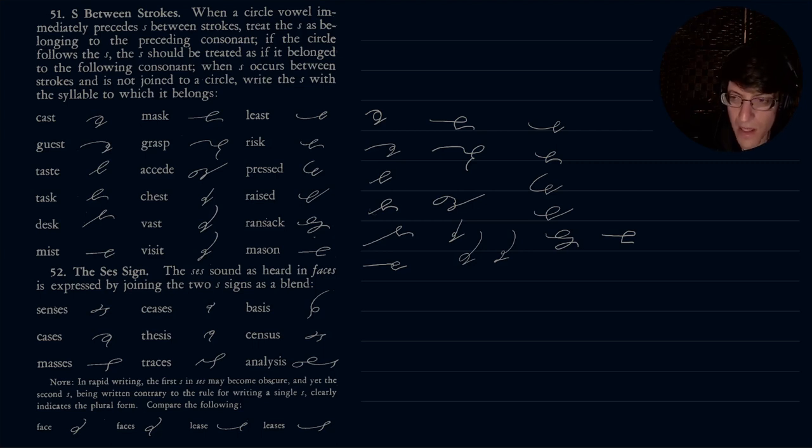When a circle vowel immediately precedes S between strokes, treat the S as belonging to the preceding consonant. So what that means is it takes on the characteristics of the writing of the previous consonant. If the circle follows the S, the S should be treated as if it belonged to the following consonant. When S occurs between strokes and is not joined to a circle, write the S with the syllable to which it belongs.